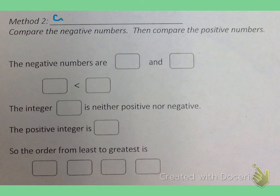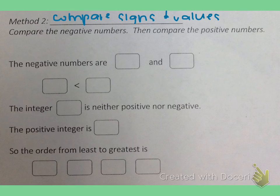Another method we can use is to compare the signs and values of the integers. So what we would do is we would compare the negative numbers and then compare the positive numbers. We're still using the same set of numbers that we used in the previous example.